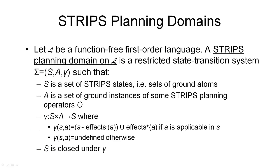Here is how we can define a STRIPS planning domain. We start with a function-free first-order language L. A STRIPS planning domain over this language L is then a restricted state transition system consisting of components S, A, and gamma. In a restricted state transition system, we do not have events — we only have the states S, the actions A, and the state transition function gamma.